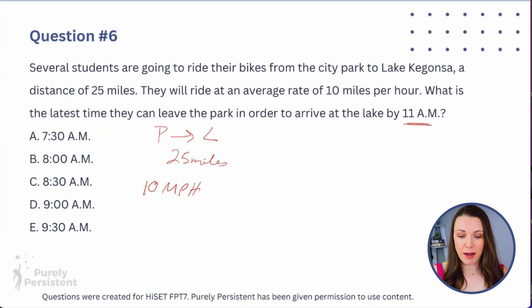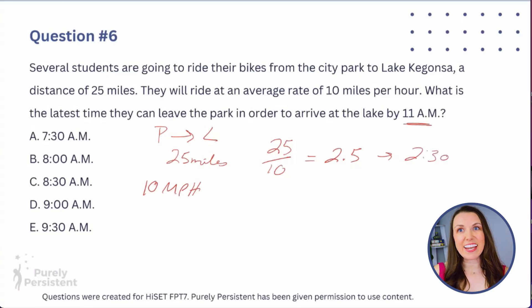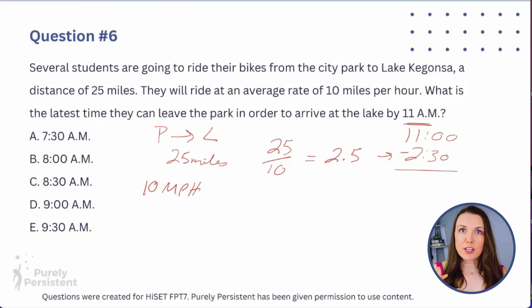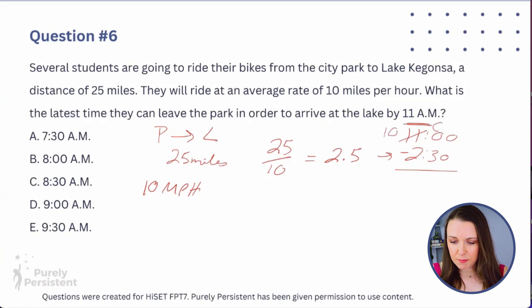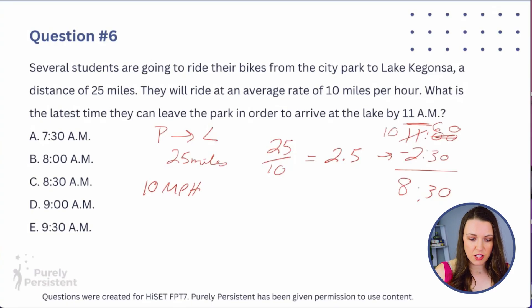So 25 miles at 10 miles per hour — we can just say 25 divided by 10, which gives us 2.5. So two and a half hours, which is two hours and 30 minutes. So we can just take 11 minus 2 hours 30 minutes. This looks a little different than regular math because we're dealing with time. I'm going to take 11, turn it into 10, and change the 0 minutes to 60. Then 60 minutes minus 30 minutes is 30, and 10 minus 2 is 8. So the latest they can leave is 8:30.